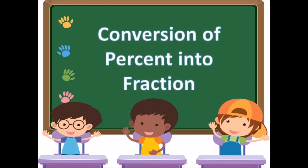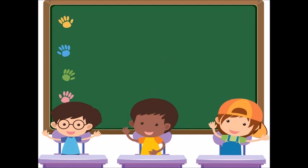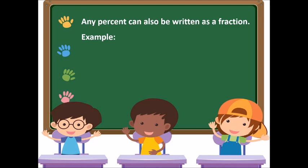Conversion of Percent into Fraction. Any percent can also be written as a fraction. For example, 5% is equal to 5 over 100. If we simplify, we divide the numerator and the denominator by 5, so we arrive at 1 over 20.